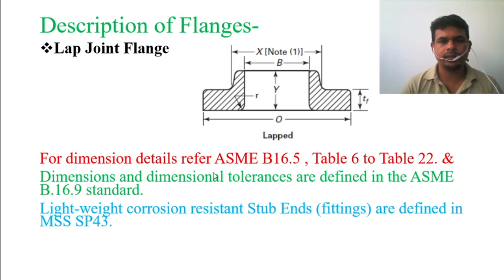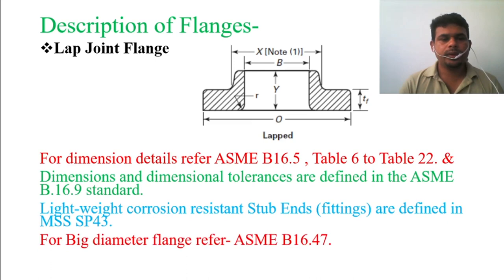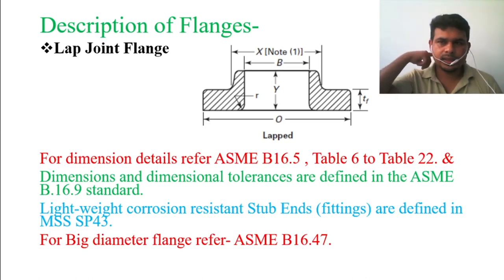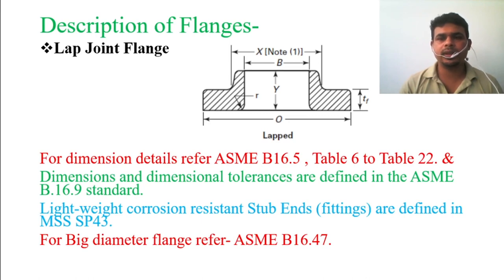If you go through these standards, you will be able to understand all the dimensional tolerances in detail. My lectures aim to give you basic information and key references — if you are more interested, you can visit these standards to learn more. For big diameter flanges, refer to ASME B16.47. As I mentioned in a previous lecture, ASME B16.5 covers up to 24-inch flanges, and from 26 to 60 inches you need to refer to ASME B16.47.